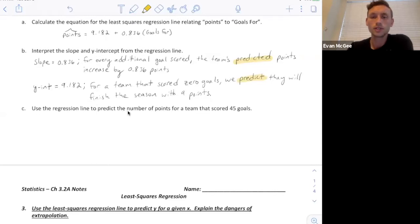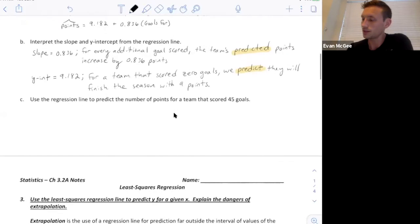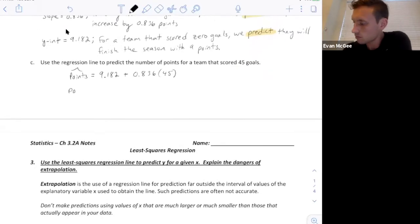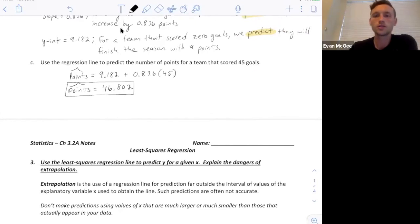Let's use the regression line to predict the number of points for a team that scored 45 goals. All we're going to do is we're going to plug in 45 for our x variable, number of goals scored, and get our predicted points. Using this linear model, we would expect if a team scored 45 goals that they would finish the season with 46.802 points.